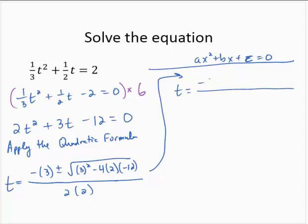Simplifying gives me negative 3 plus or minus the square root of 9. 4 times 2 is 8, and 8 times 12 is 96, so I'd have 9 minus negative 96. So that's 9 plus 96. And the denominator is 4.